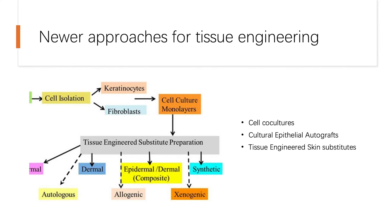Now I'm going to talk about newer approaches for tissue engineering. First, let's consider what an ideal skin substitute should be like. It needs to be thorough, barrier-like, with no inflammatory response, non-toxic, allow water vapor transmission like normal skin, and have similar physical and mechanical properties. From a logistical angle, it needs to be easy to handle, inexpensive, have a long shelf life, and low storage requirements. The paper introduces three approaches for tissue engineering: cell co-culture, cultured epithelial autograft, and tissue engineered skin substitute.